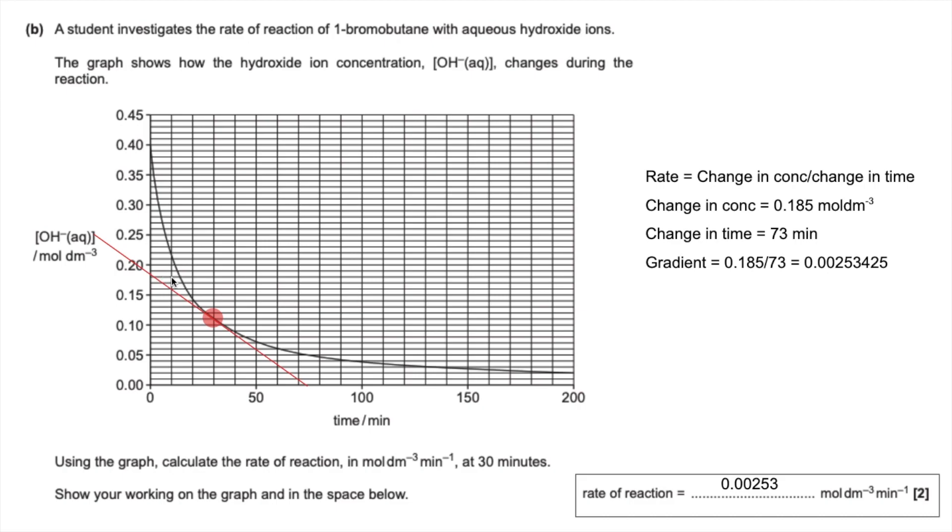Tangents are variable, so yours might be slightly steeper or shallower than mine, but the exam board would apply a plus or minus 10% tolerance on what they think is the right answer. As long as you're within 10% of that, you'd be fine.